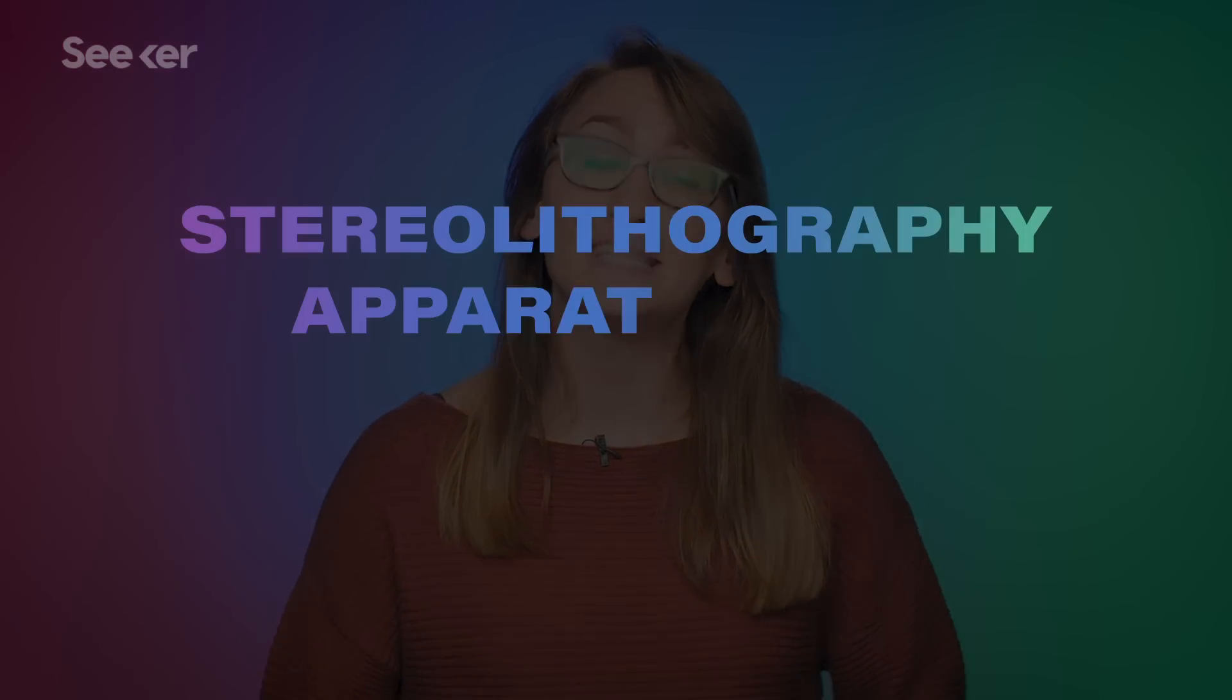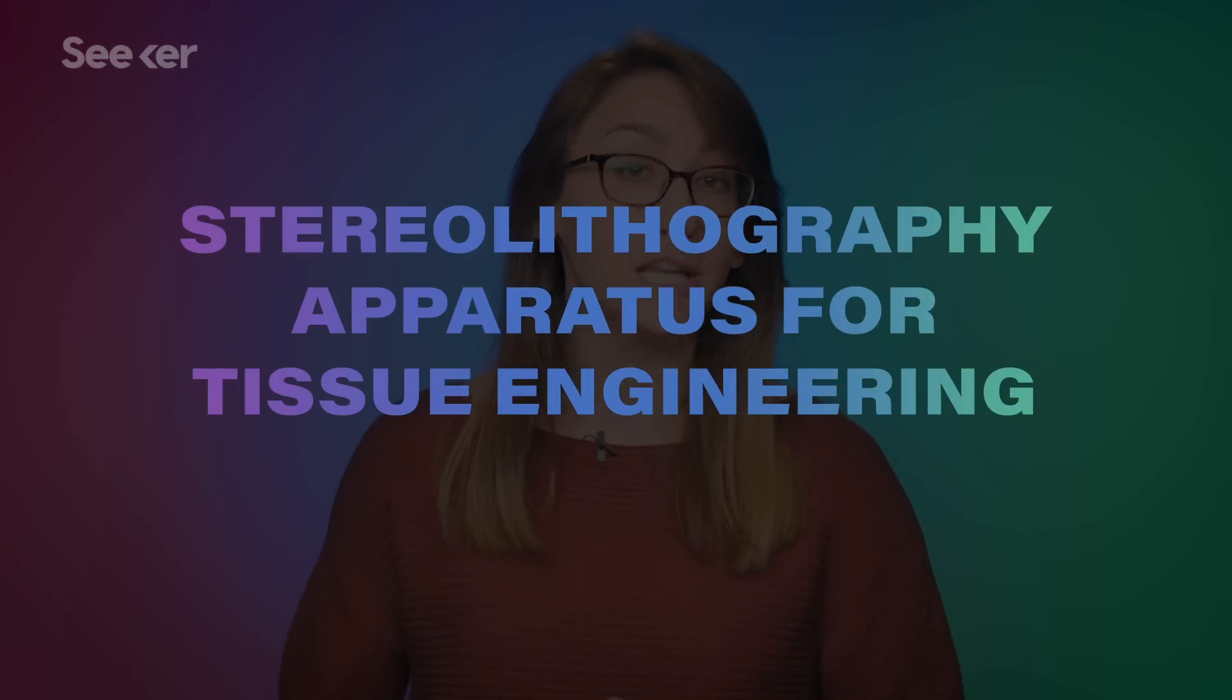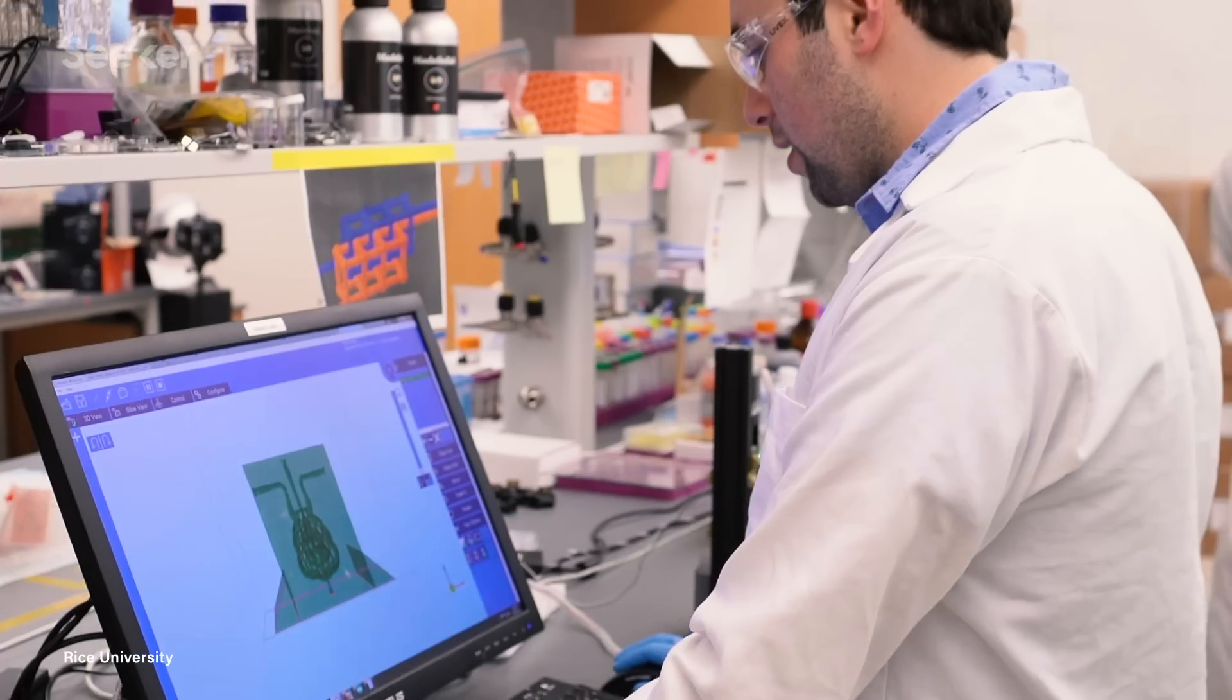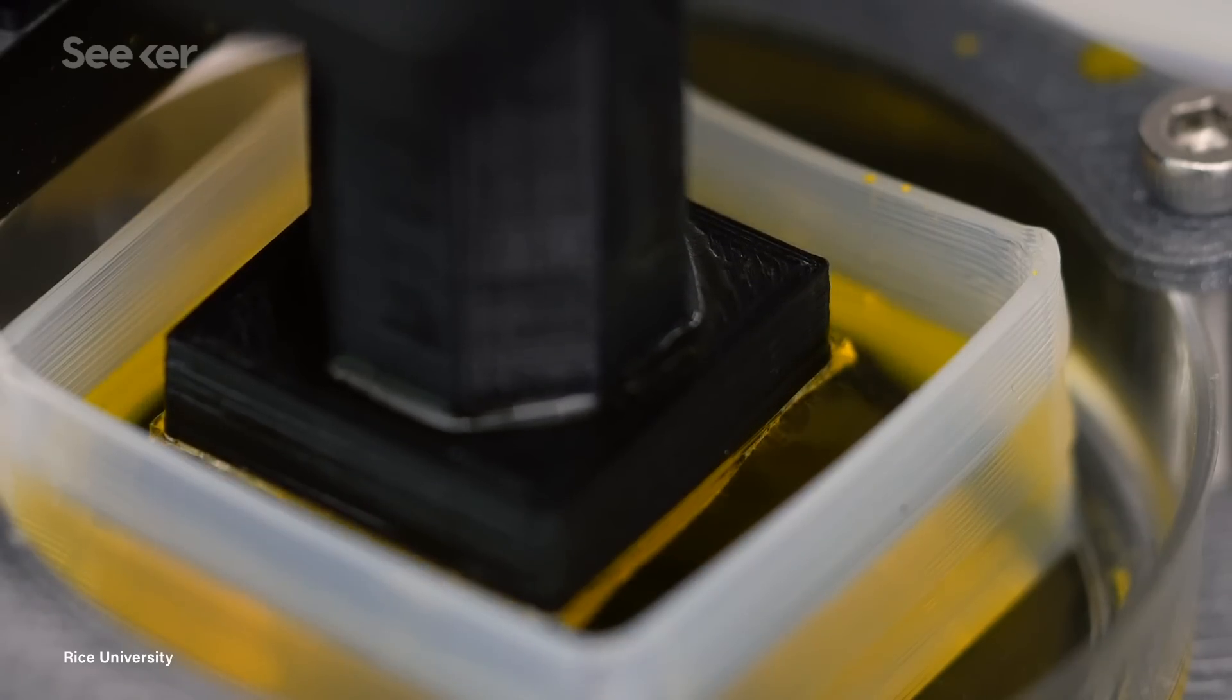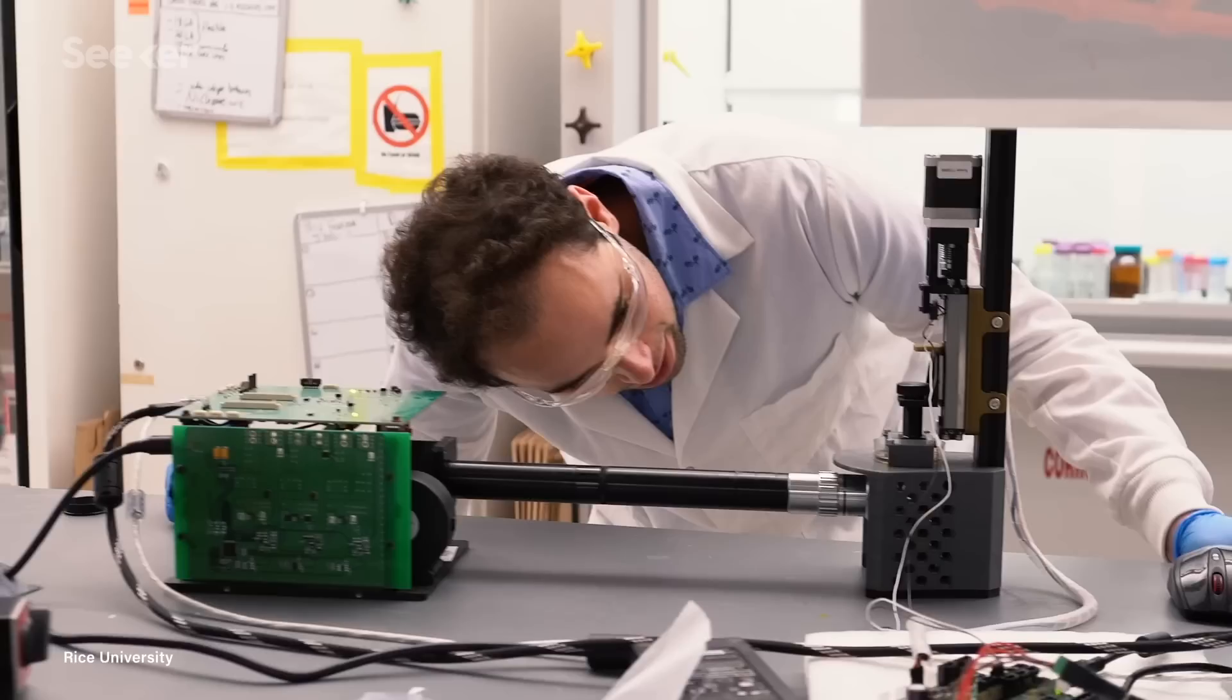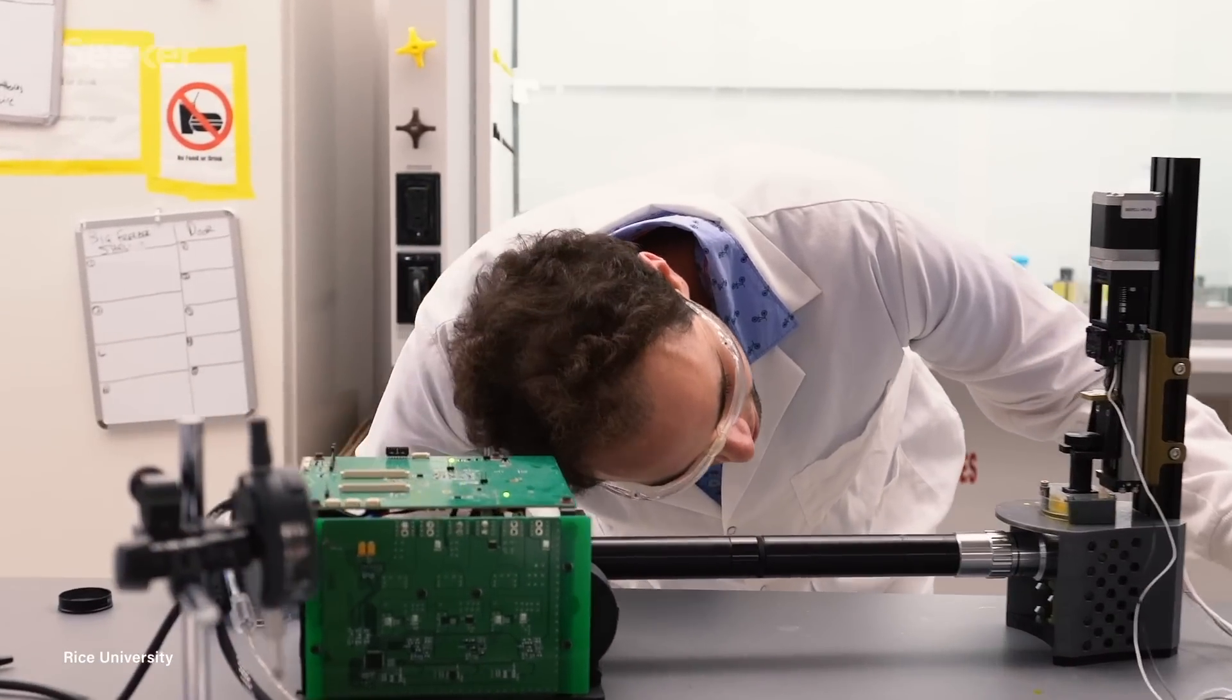They used a technique called stereolithography apparatus for tissue engineering, or SLATE. It's an open-source bioprinting technology that uses additive manufacturing to create soft hydrogels layer by layer by using light from a digital projector.